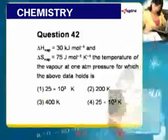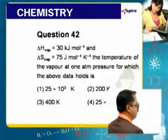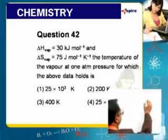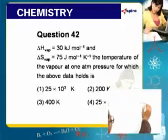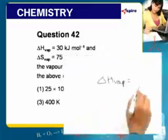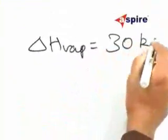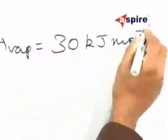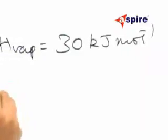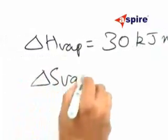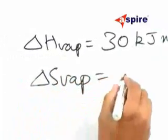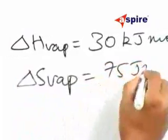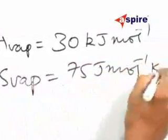In this problem, you are given some data. Delta H vaporization is given as 30 kilojoules per mole, and delta S vaporization is given as 75 joules per mole per Kelvin.